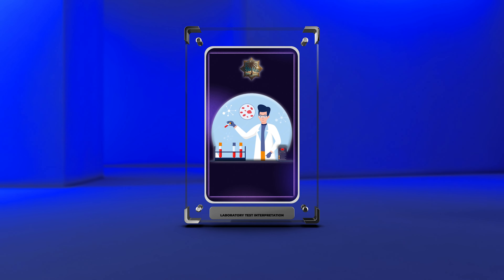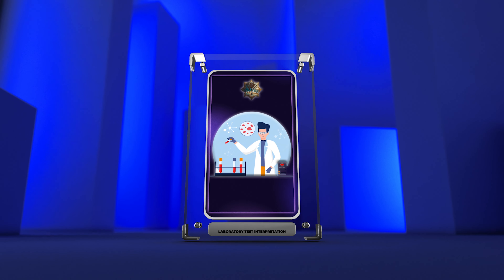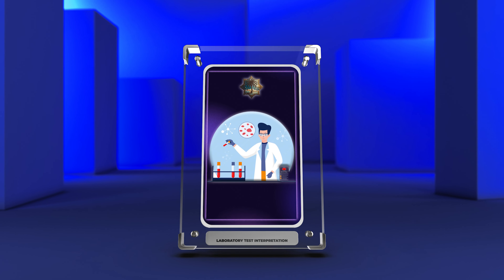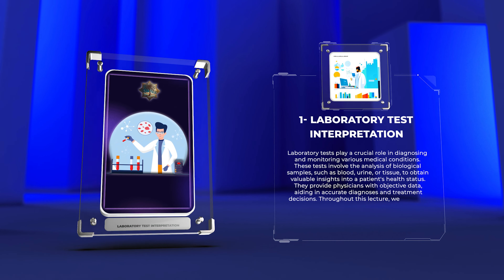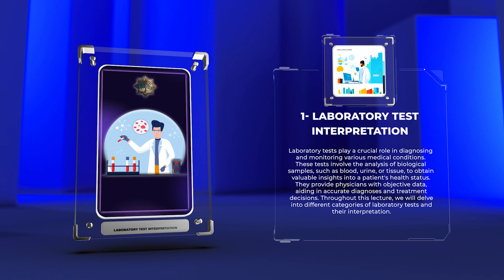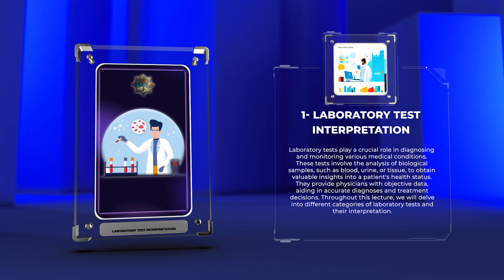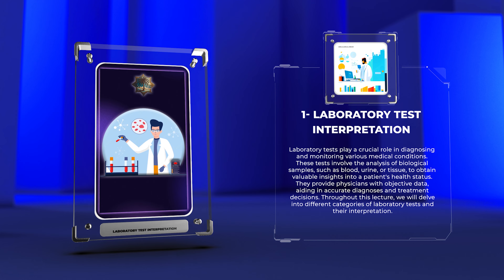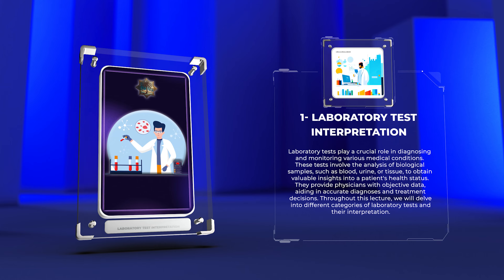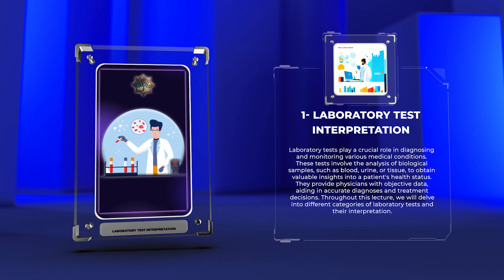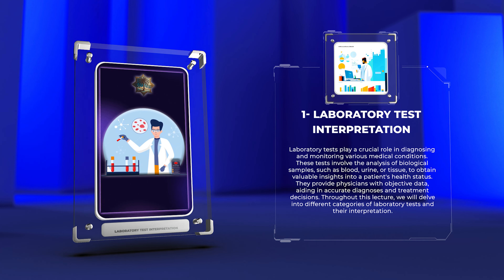Welcome to today's lecture on laboratory test interpretation in medicine. In this detailed script, we will explore various topics related to interpreting laboratory tests, providing you with a comprehensive understanding of the subject matter. Laboratory tests play a crucial role in diagnosing and monitoring various medical conditions. These tests involve the analysis of biological samples, such as blood, urine, or tissue, to obtain valuable insights into a patient's health status. They provide physicians with objective data, aiding in accurate diagnoses and treatment decisions. Throughout this lecture, we will delve into different categories of laboratory tests and their interpretation.